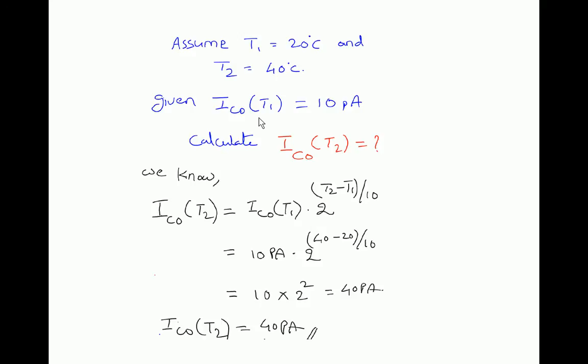The general formula with respect to temperature for reverse saturation current is: IC0(T2) = IC0(T1) × 2^((T2 − T1)/10). Reverse saturation current gets doubled for every 10 degree centigrade rise in temperature. So if temperature rises by 10 degrees centigrade, T2 − T1 = 10, then 2^(10/10) = 2^1 = 2. So the previous reverse saturation current is multiplied by 2, meaning it doubles for every 10 degree centigrade rise.